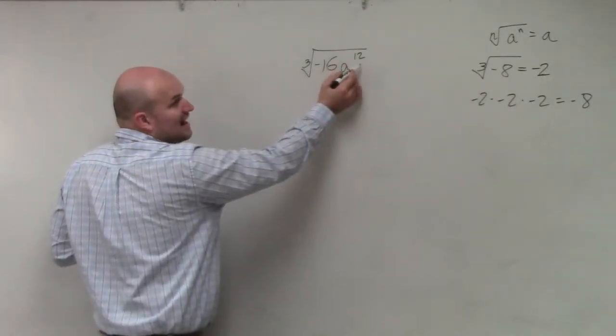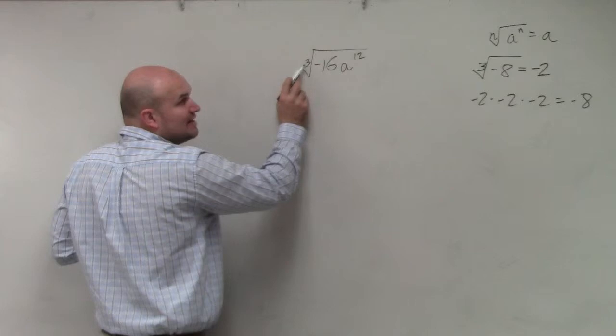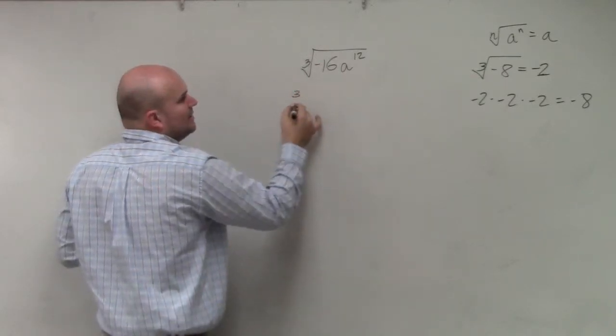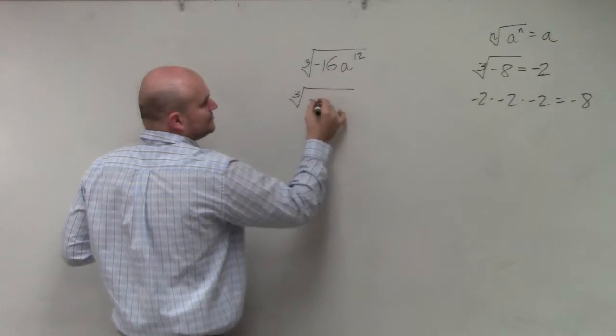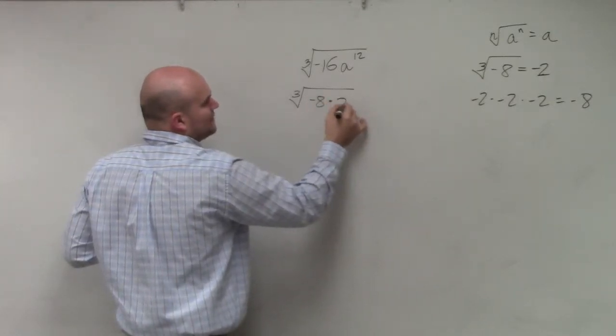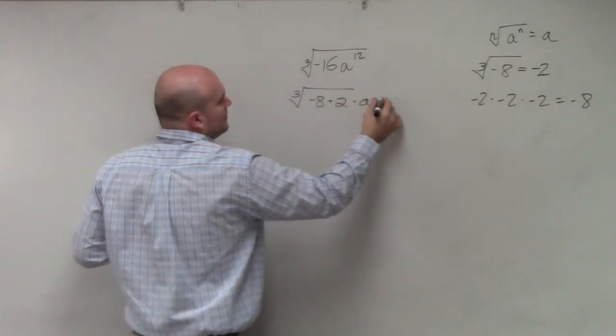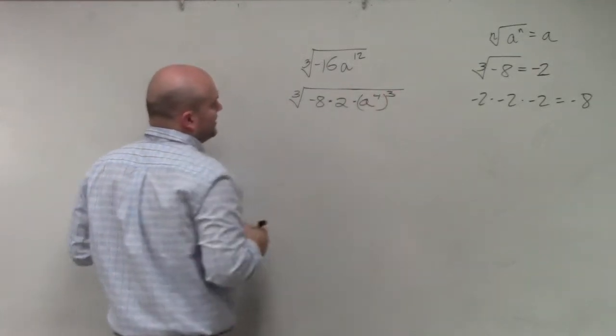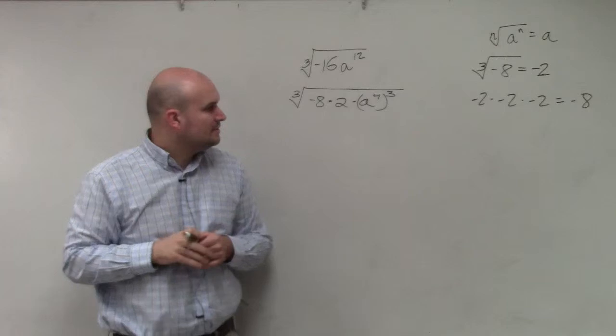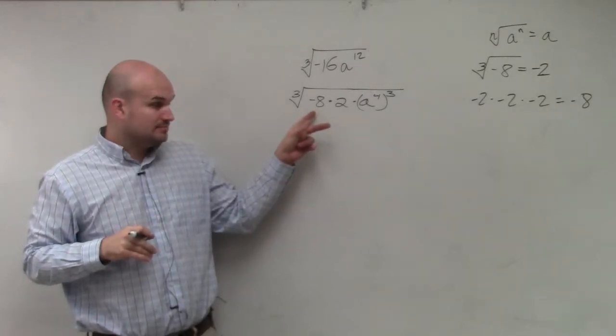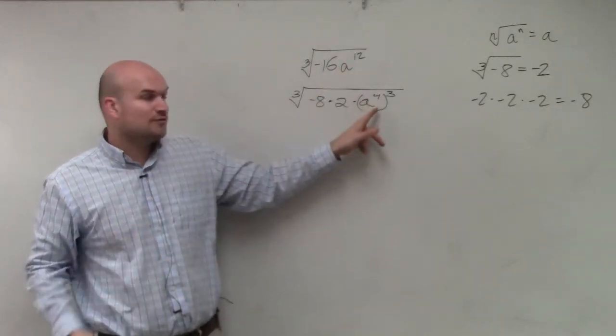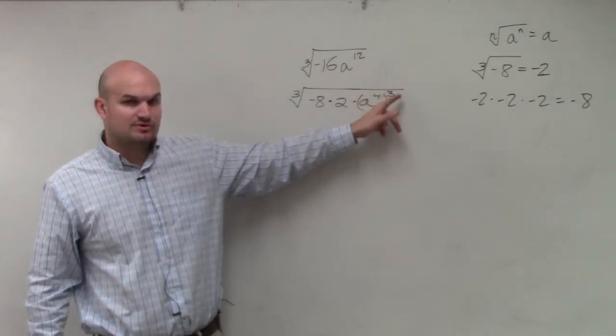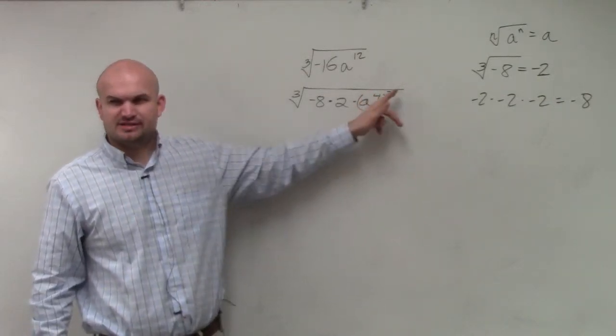And then a to the 12th, I can raise that to the third power. I can raise a to the fourth to the third power. So I'm just going to write it how I would do it. And then I'll have you guys take a look at it. That is my cubed number. That is a to the 12th written as something to the third power. A to the fourth cubed. Does everybody see how that gives you a to the 12th?